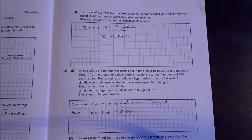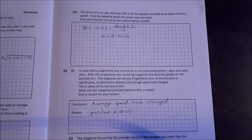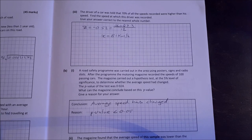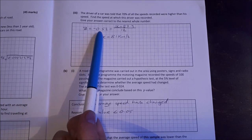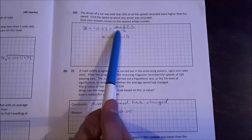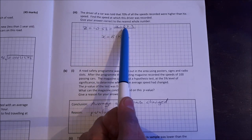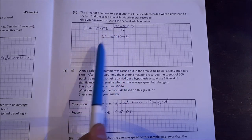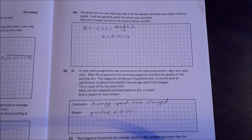Part 3. The driver of a car was told that 70% of all speeds recorded were higher than his speed. Find the speed at which this driver was recorded. Give your answer correct to the nearest whole number. So the z-score for 70% is minus 0.52. So let's use the formula again. x minus x bar over sigma. We know 87.3. We know sigma. So solve for x. You get 81 kilometers per hour.